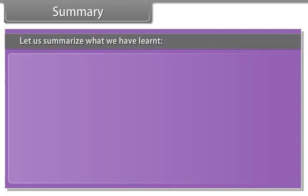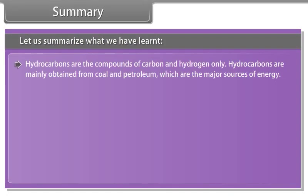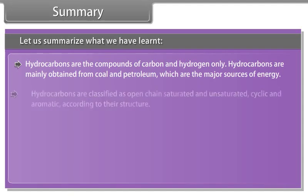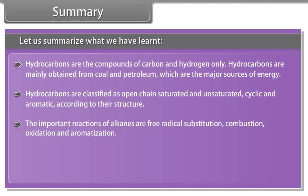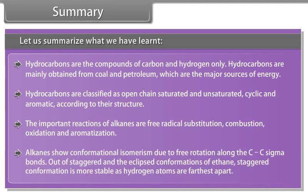Let us summarize what we have learned. Hydrocarbons are the compounds of carbon and hydrogen only. Hydrocarbons are mainly obtained from coal and petroleum, which are the major sources of energy. Hydrocarbons are classified as open chain saturated and unsaturated, cyclic, and aromatic according to their structure. The important reactions of alkanes are free radical substitution, combustion, oxidation, and aromatization. Alkanes show conformational isomerism due to free rotation along the C-C sigma bonds. Out of staggered and eclipsed conformations of ethane, staggered conformation is more stable as hydrogen atoms are farthest apart.